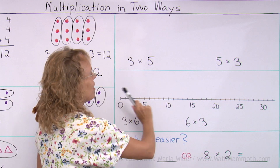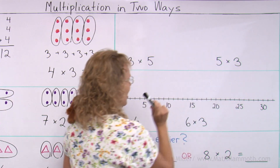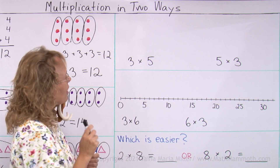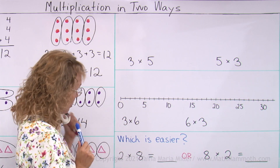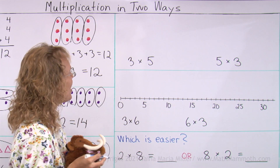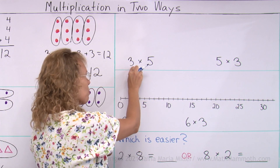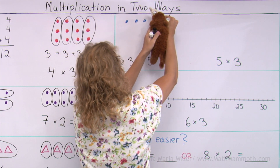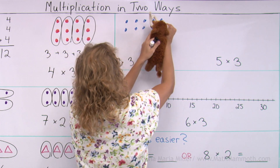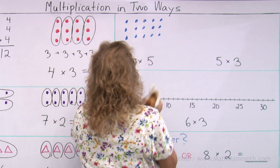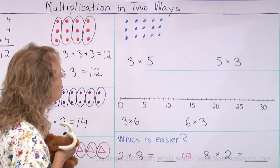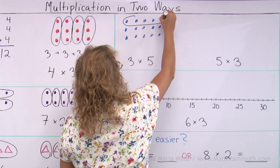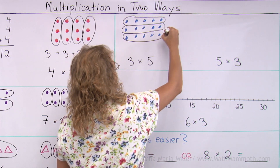Over here we have three times five and five times three. We already know that the answer to both will be the same. But our task is to draw some blueberries. Mati? Three times five means three groups and five in each group. That's one group of five blueberries, another group of five, and then the third group. Let's also circle the groups so it is clear — we have three groups of five.